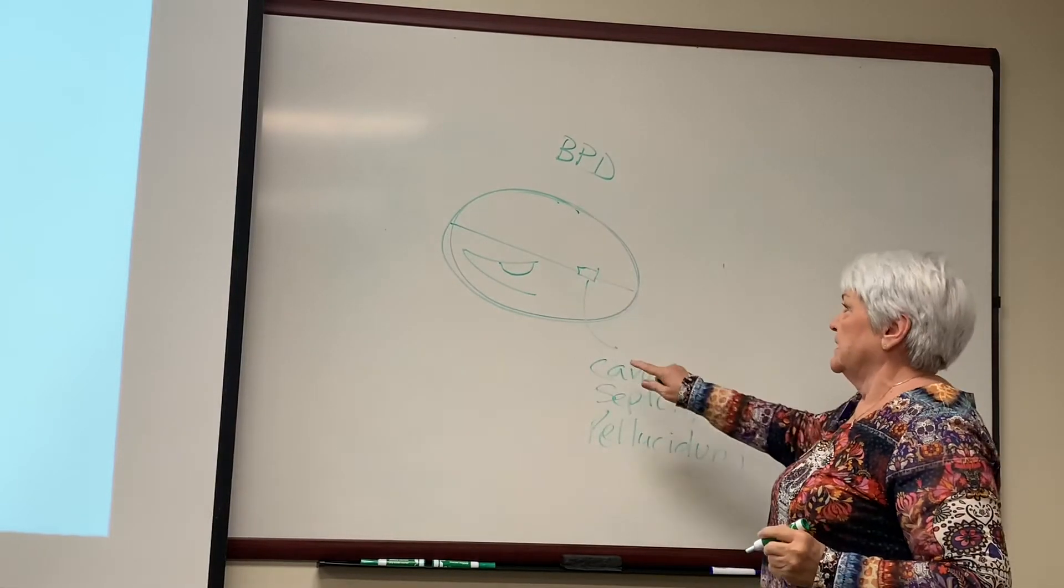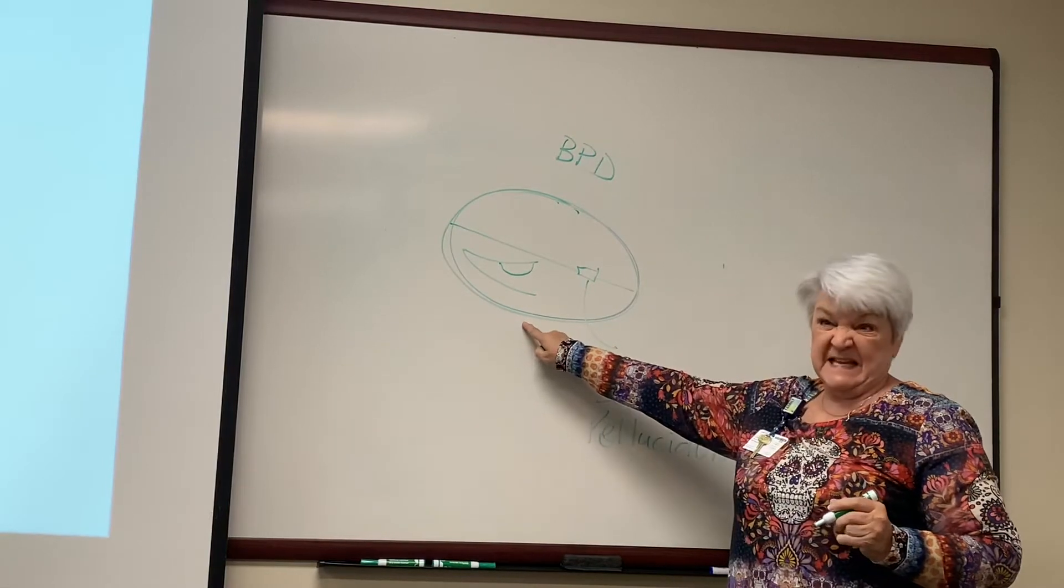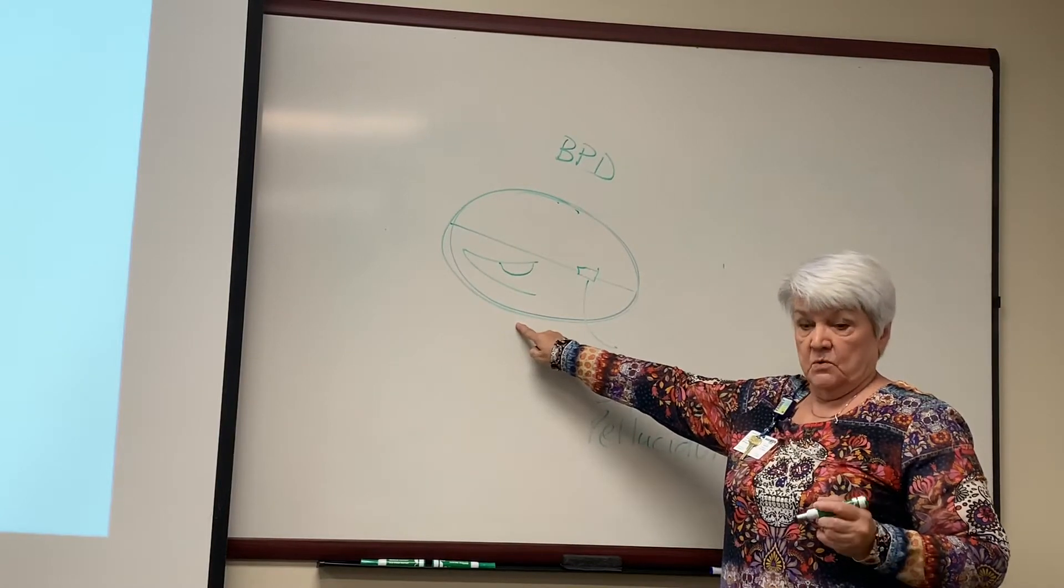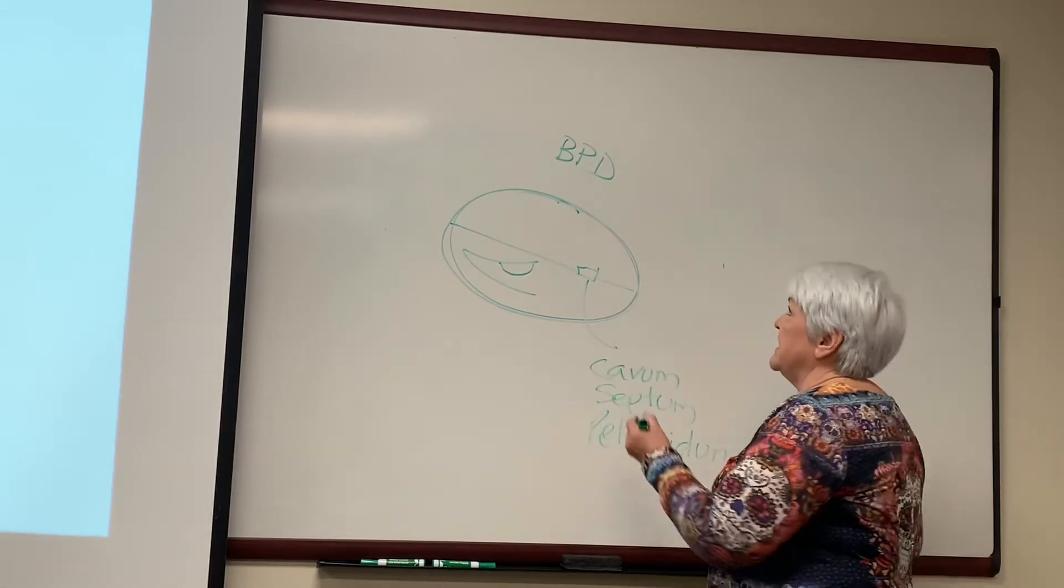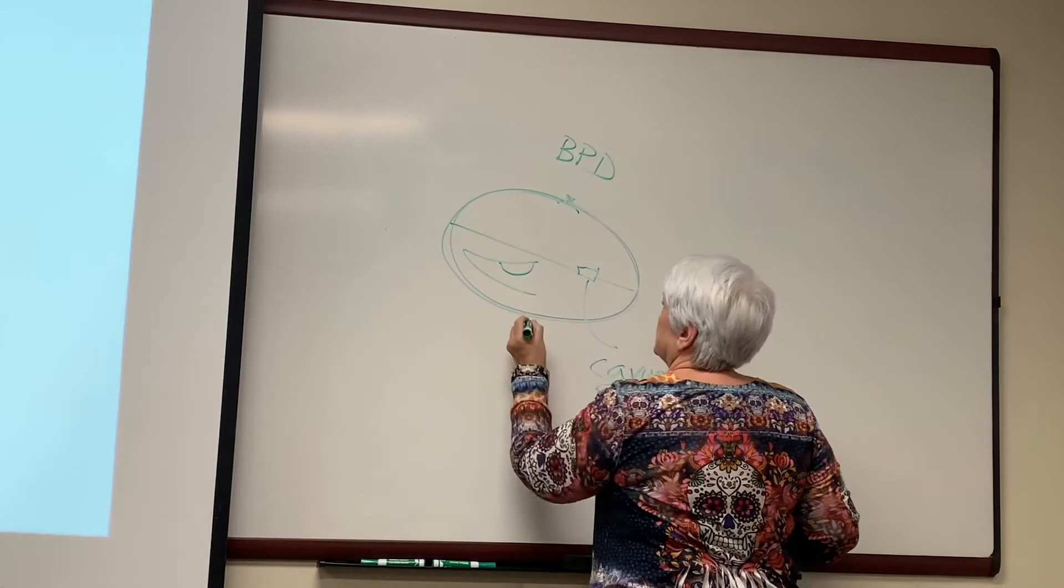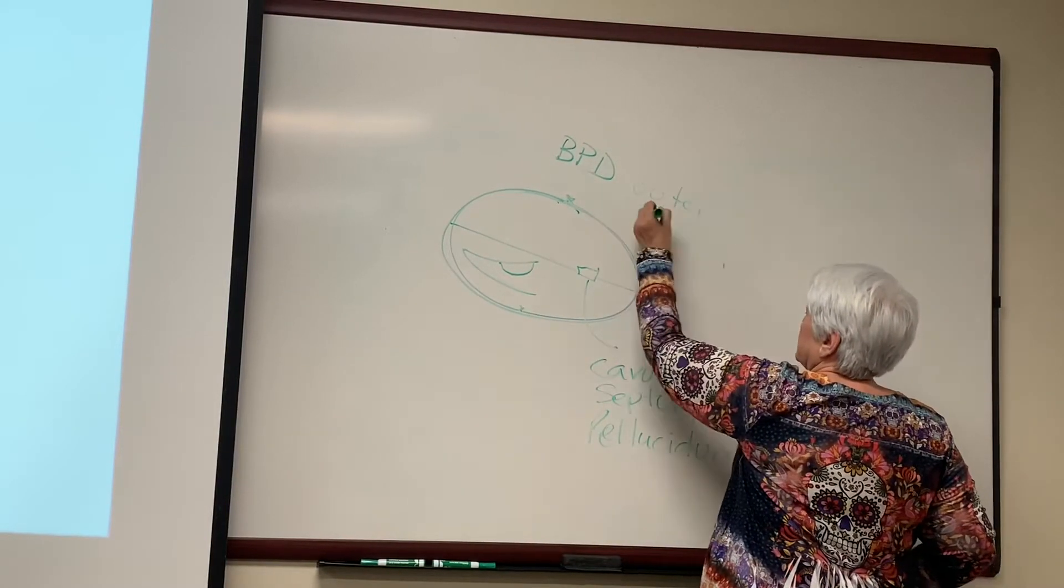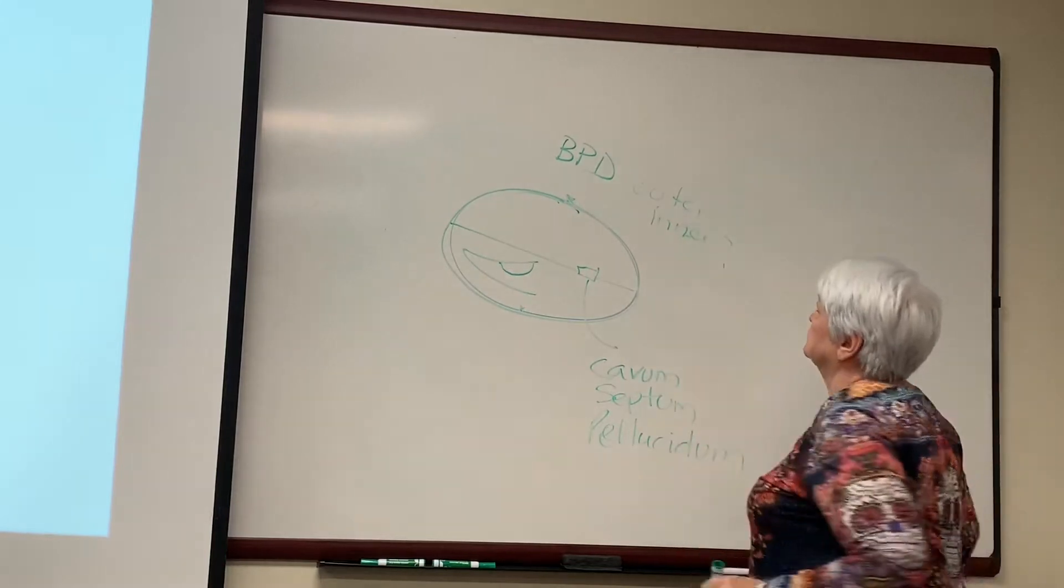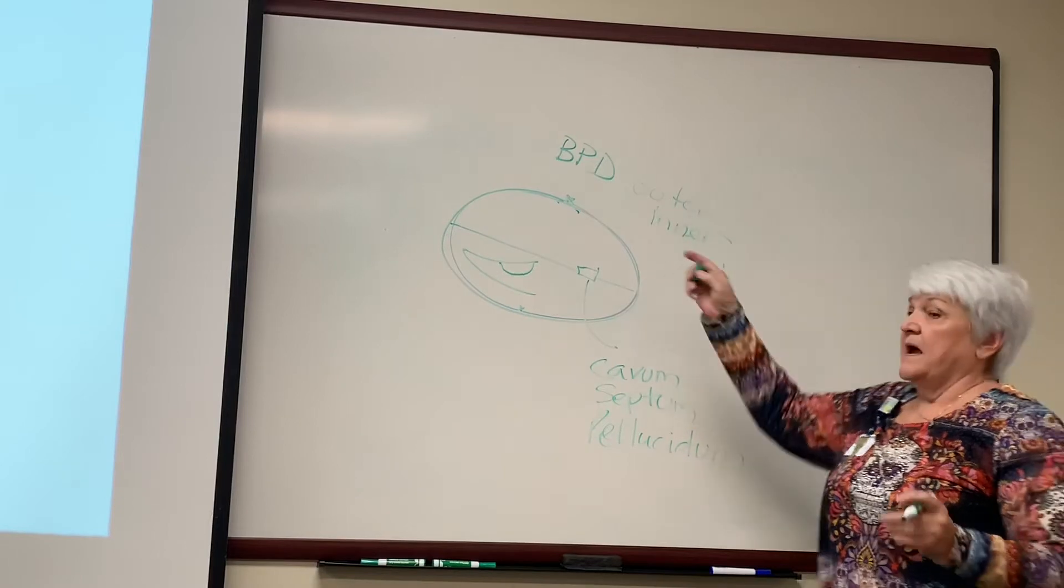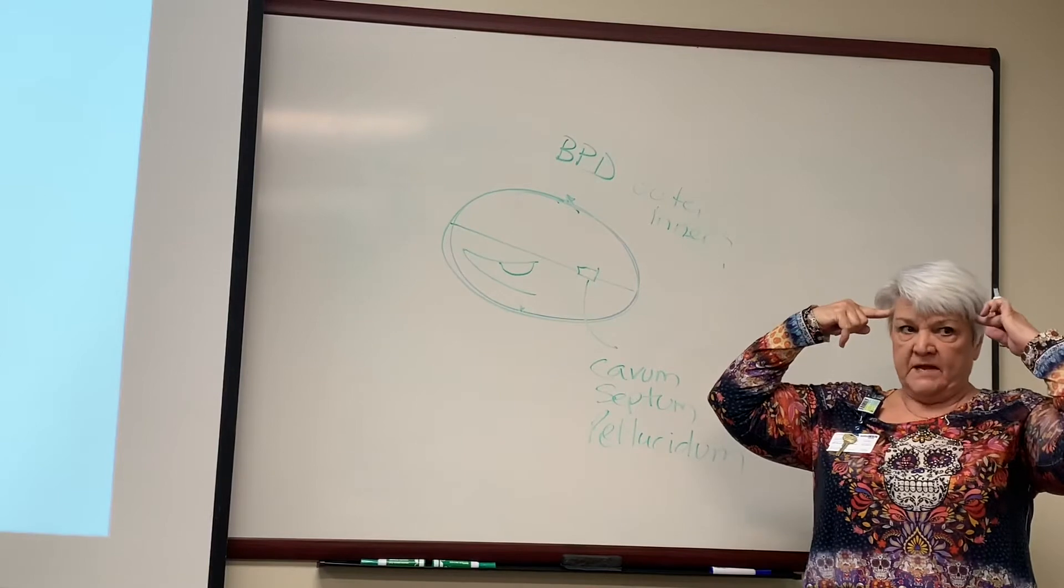Now, let's say the green line here is the skin. Do not measure skin. So I'm going to measure it from outer to inner. Outer to inner. That's BPD, biparietal diameter. Parietal bone, parietal bone.